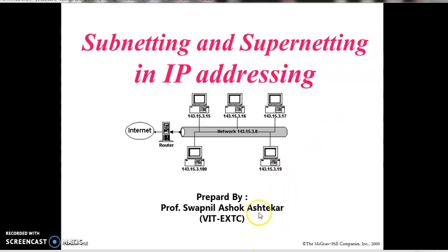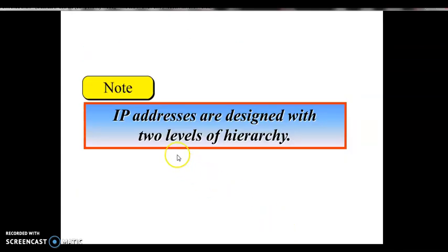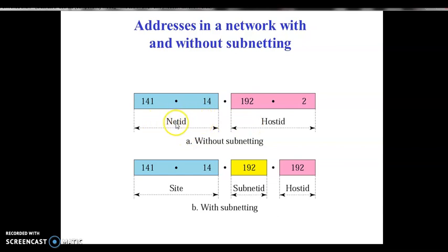In this video lecture we'll try to understand subnetting and supernetting. IP addresses are designed with two levels of hierarchy: the first part is the network ID and the other part is the host ID. Without subnetting, these two parts are fixed. When we talk about subnetting, some part of the host ID will become the subnetwork ID, and how many bits depend upon how many subnetworks we need.